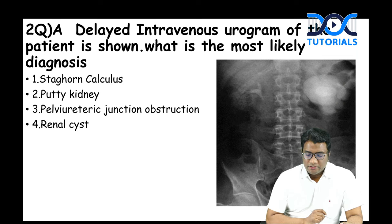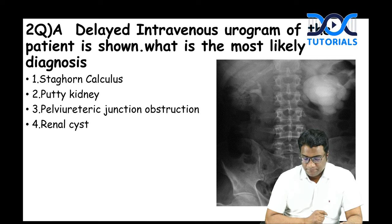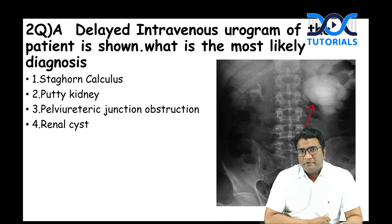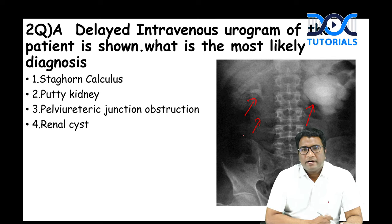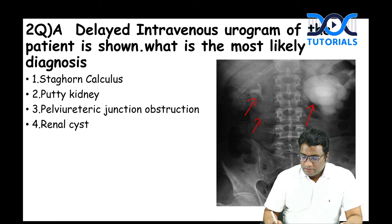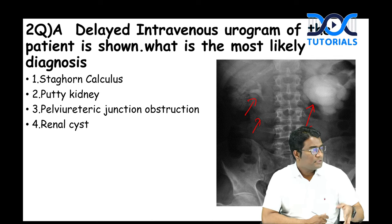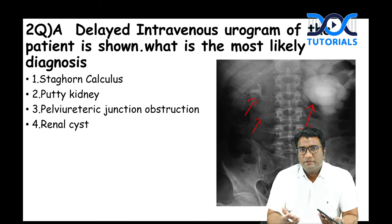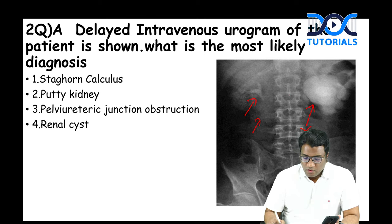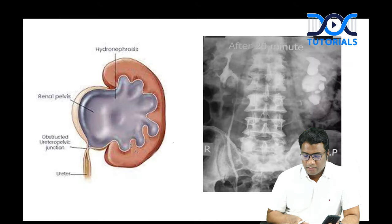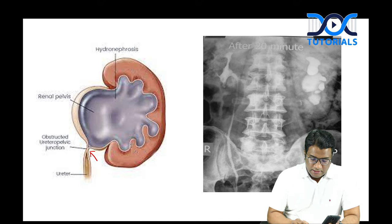The next question showed a delayed intravenous urogram. Options were staghorn calculi, putty kidney, pelvi-ureteric junction obstruction, or renal cyst. The image showed dense collection in the left kidney while the right kidney had contrast entering the ureter and bladder, but minimal filling of the left ureter — suggestive of pelvi-ureteric junction (PUJ) obstruction.